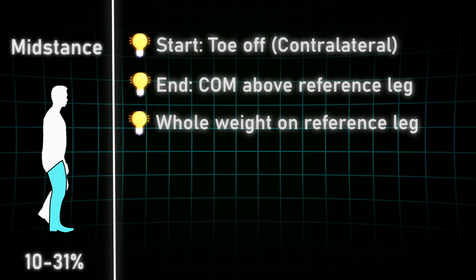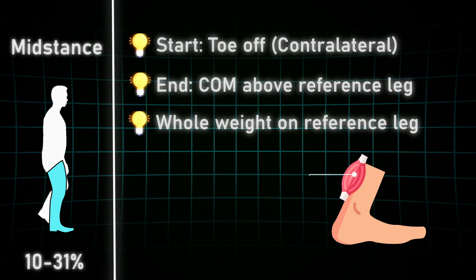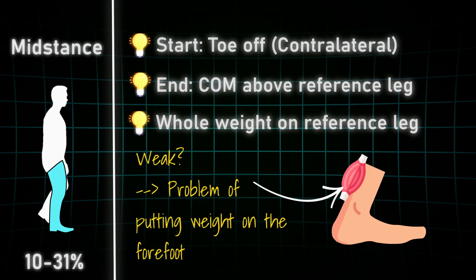This is also controlled by the gastrocnemius and soleus, which regulate the dorsiflexion of the upper ankle joint very precisely. If this muscle is too weak or otherwise impaired, patients have a really hard time shifting the weight forward or otherwise they would fall.